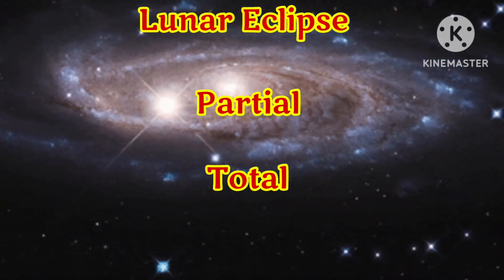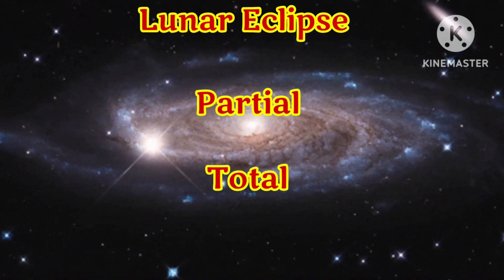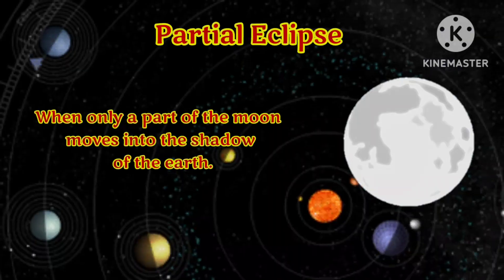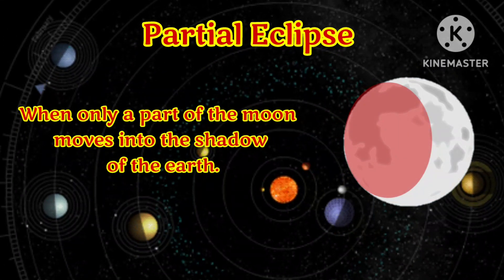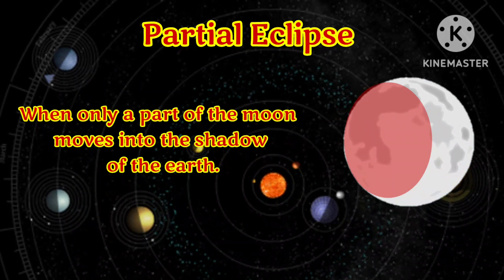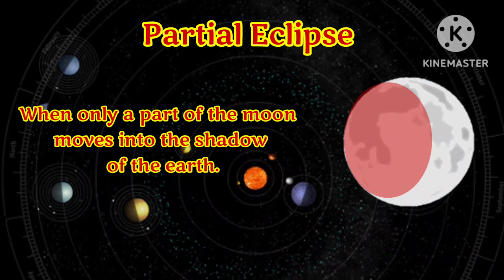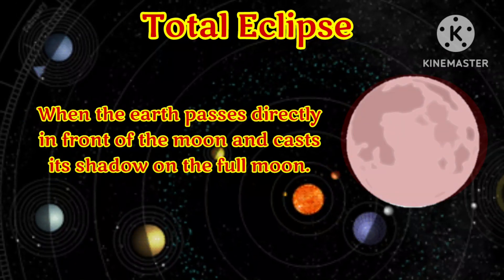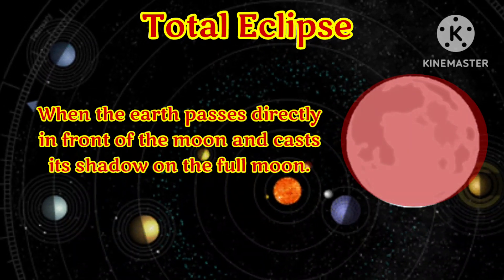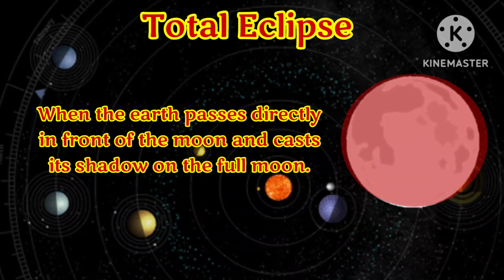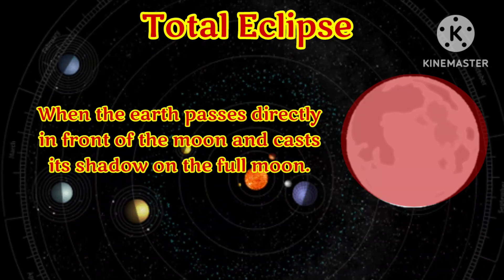Lunar eclipse can be categorized as partial and total. Partial lunar eclipse occurs when only a part of the moon moves into the shadow of the earth. Total eclipse occurs when the earth passes directly in front of the moon and casts its shadow on the full moon.